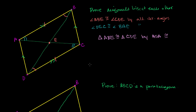Now what does that do for us? Well, we know if two triangles are congruent, all of their corresponding features — especially all of their corresponding sides — are congruent. So we know that side AE corresponds to side CE. They're corresponding sides of congruent triangles, so their lengths must be the same. So AE must be equal to CE.